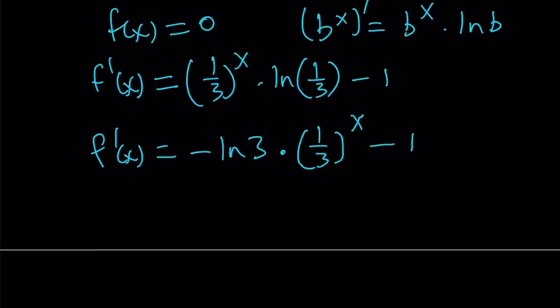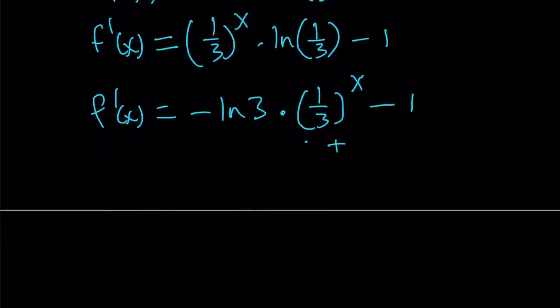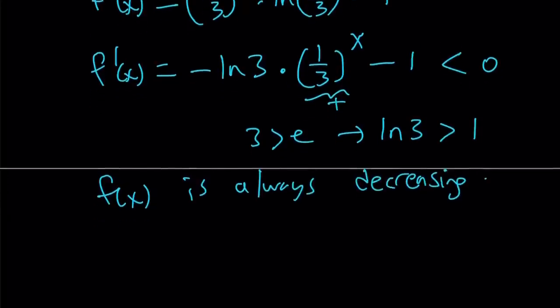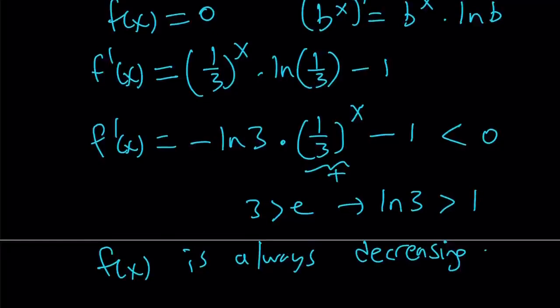For any x value, notice that 1 over 3 to the power x is always positive. We're subtracting 1 from it, so don't worry about it. But ln 3, since 3 is greater than 1, ln 3 is going to be positive. But when you multiply by negative, that's going to be a negative quantity. In other words, this f prime is always less than 0, which means that your function is always decreasing. Meaning that it can only intersect the x-axis at a single point.